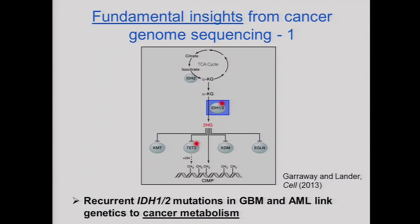What was even more remarkable was that the mutations were neomorphic — they gave a new function to this enzyme. They caused alpha-ketoglutarate to become what we call an oncometabolite, 2-hydroxyglutarate. Among the things that 2-hydroxyglutarate does is interfere with a whole series of enzymes normally controlled by alpha-ketoglutarate, for example histone methyltransferases, the TET enzymes, histone demethylases, and HIF enzymes involved in response to cellular hypoxia. This spectrum of alterations has effects including major dysregulation of DNA methylation in genomes, and it has given rise to an entire field.